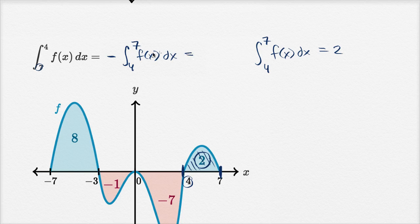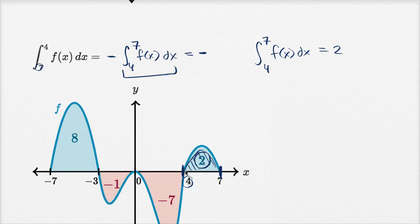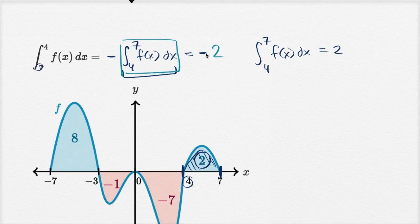And so this is going to be negative. The integral from four to seven of f of x dx, well now that is this area. F of x is above the x-axis, it's a positive area. So this thing is going to evaluate to positive two. But we have that negative out front, so our original expression would evaluate to negative two.